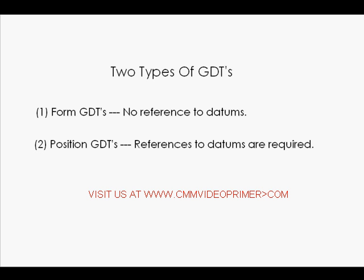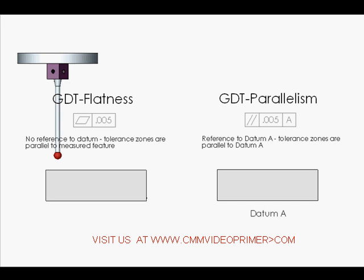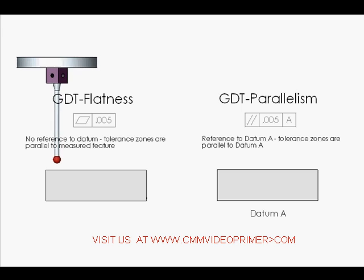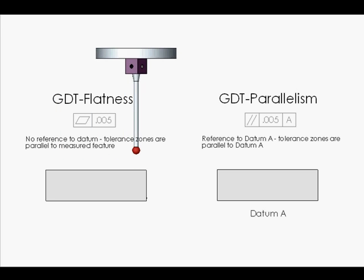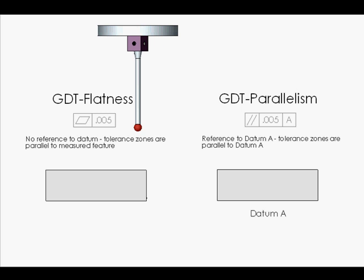Geometric dimensioning and tolerancing requirements can be described as two types of specifications. With form GDTs, tolerance zones are created relative to the measured best fit feature. Position GDTs require tolerance zones that maintain relationships to specified datums.